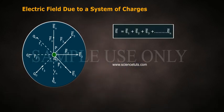E bar is equal to E1 bar plus E2 bar plus E3 bar plus and so on En bar.